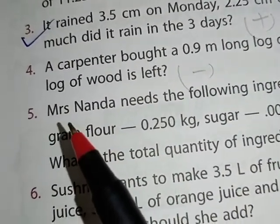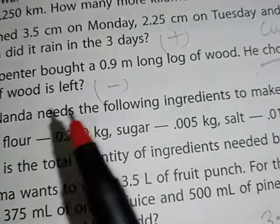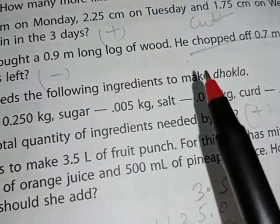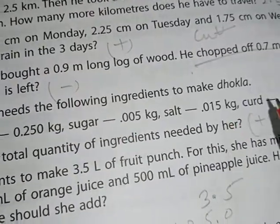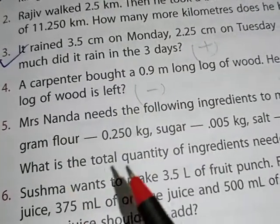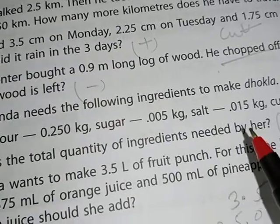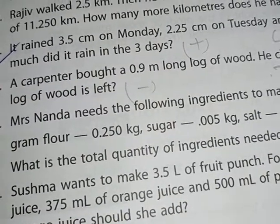Question number five: Mrs. Nanda needs the following ingredients to make dhokla. What is the total quantity of ingredients needed by her? Total quantity we need to find.